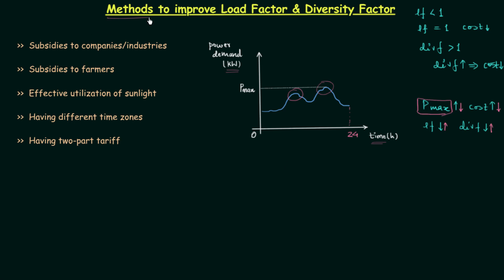We will discuss different methods to improve the load factor and diversity factor. The first method is to provide subsidies to companies and industries. Now, subsidies for what? Let's take one example to understand this.